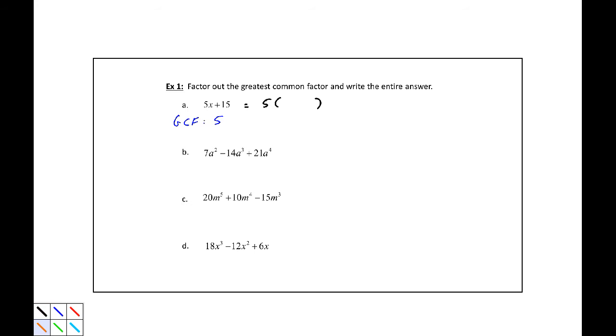So I'm going to write this as being equal to 5. Then I want to divide each of these by 5. Dividing by 5, so 5x divided by 5 is x, and 15 divided by 5 is 3. So my answer is 5, parentheses, x plus 3, close parentheses.